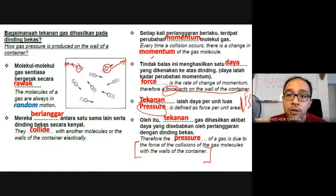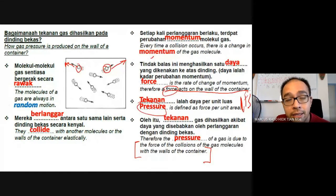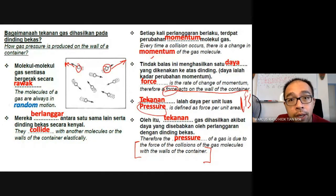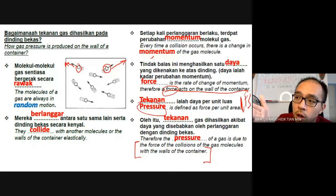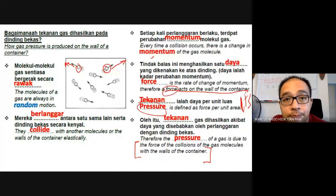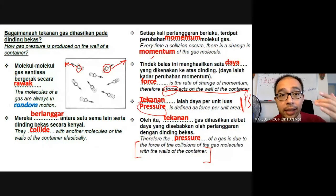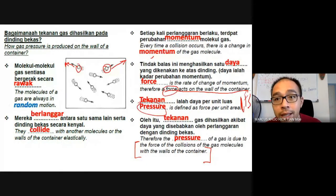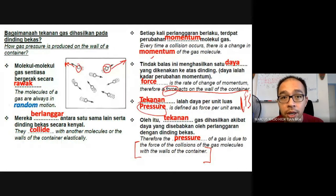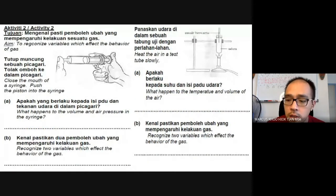The more gas there is inside the tire, the stronger the pressure. If you pump the tire to maximum, it feels very hard because there is a lot of pressure. If you under-pump, it feels soft because the gas pressure is less. The collision of gas molecules with the wall of the container causes the gas pressure. This is a level-up from what you already know — you know pumping more air makes the tire harder, but the question is why.